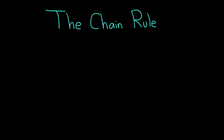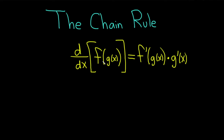Hi, everyone. It's the Mathsorcery here with Chegg. In this video, we're going to be discussing the chain rule. The chain rule basically says that the derivative of f of g of x is equal to f prime of g of x times g prime of x.